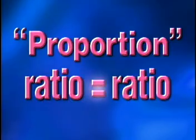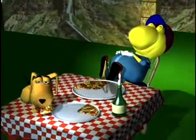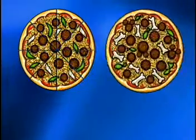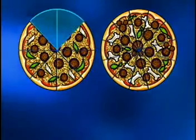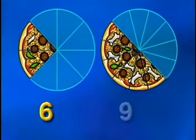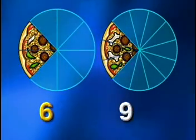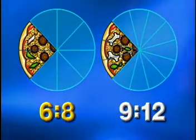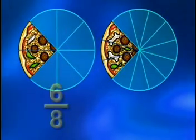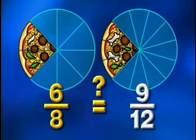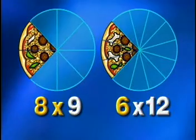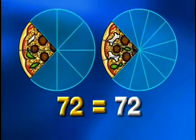Now let's look at proportions. A proportion is an equation stating that two ratios are equivalent. Let's compare how much pizza Norbert ate compared to how much Zott ate. Norbert ordered an eight slice pizza, but Zott wanted his pizza cut into twelve slices. Norbert ate six slices; Zott eats nine of his twelve. Norbert's ratio was six to eight; Zott's is nine to twelve. To see if these ratios form a proportion, we set them up: six-eighths equals nine-twelfths. Next, we cross-multiply the denominators and numerators. If the answers on either side of the equal sign are the same, then the two ratios are proportional.